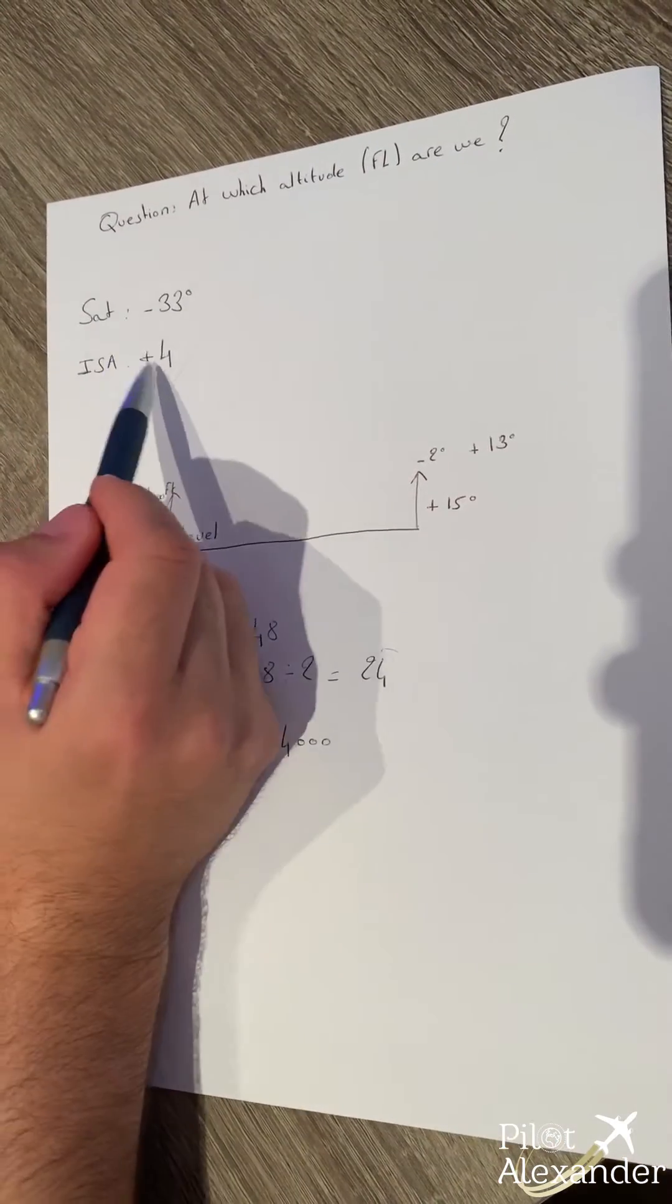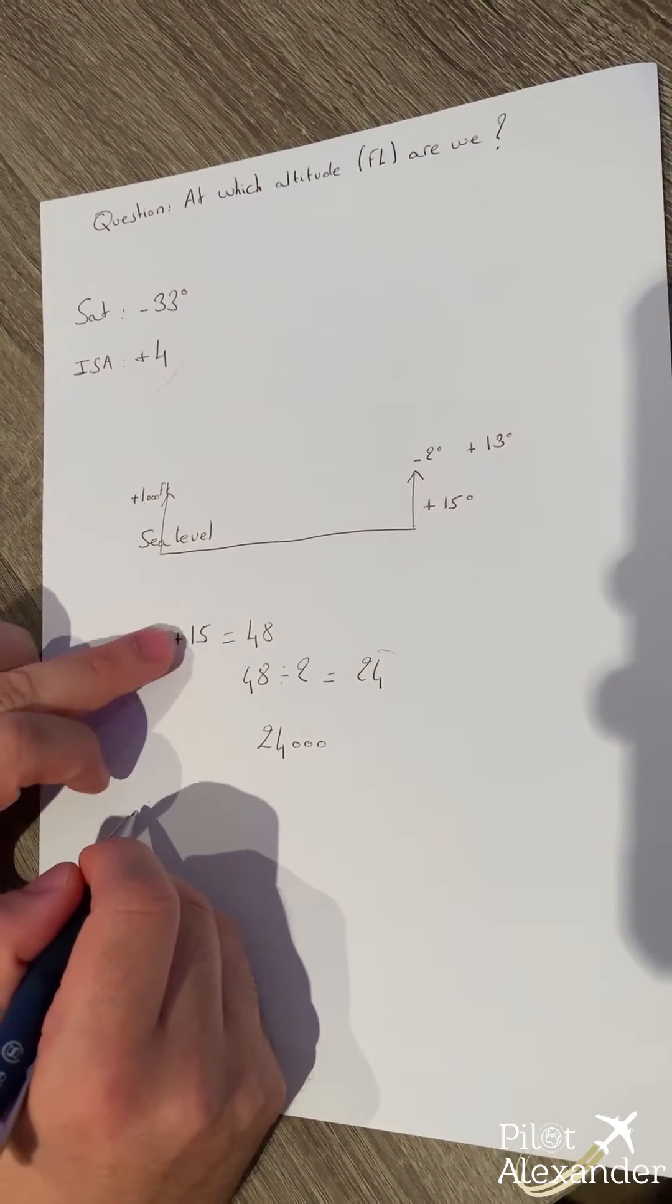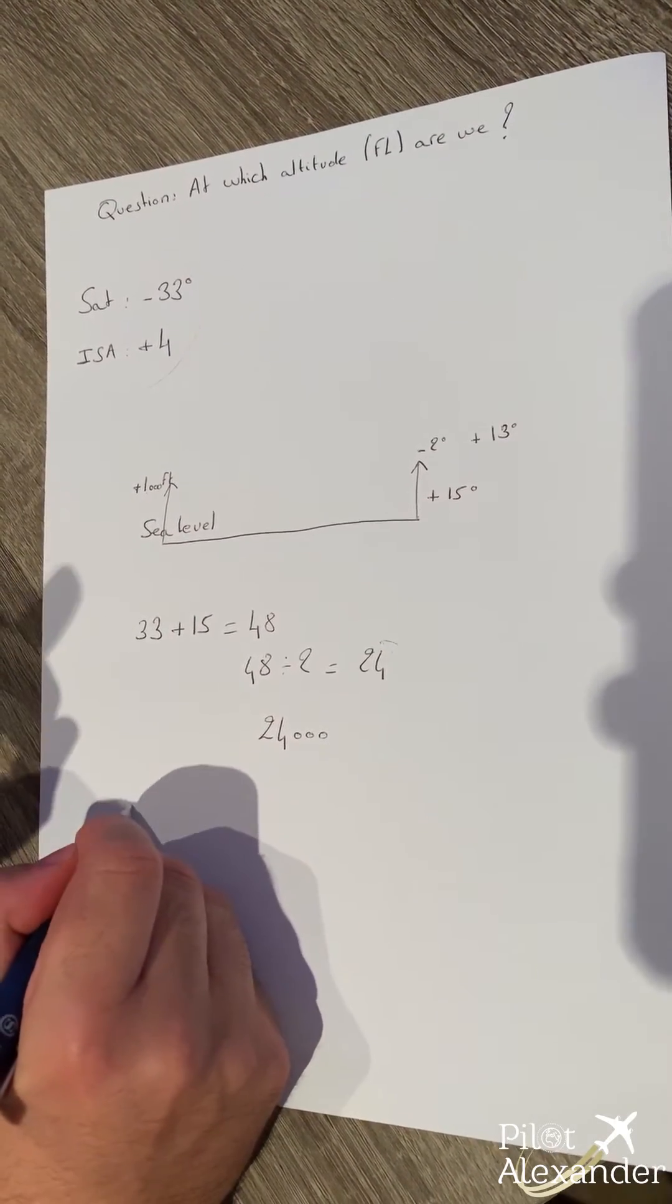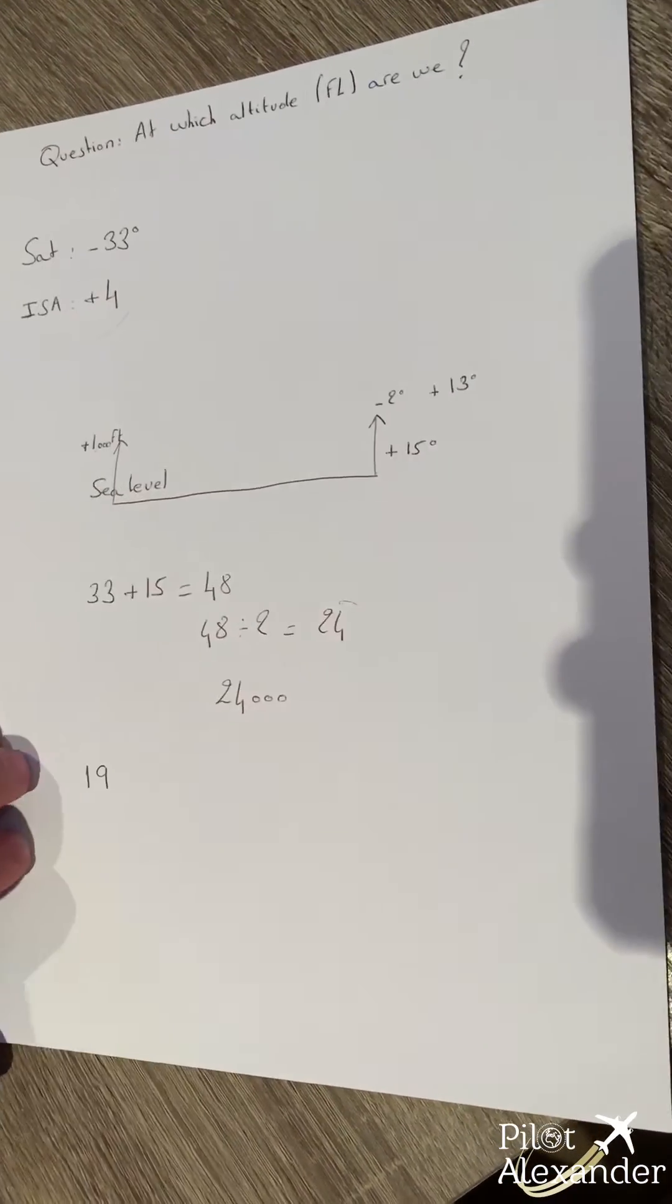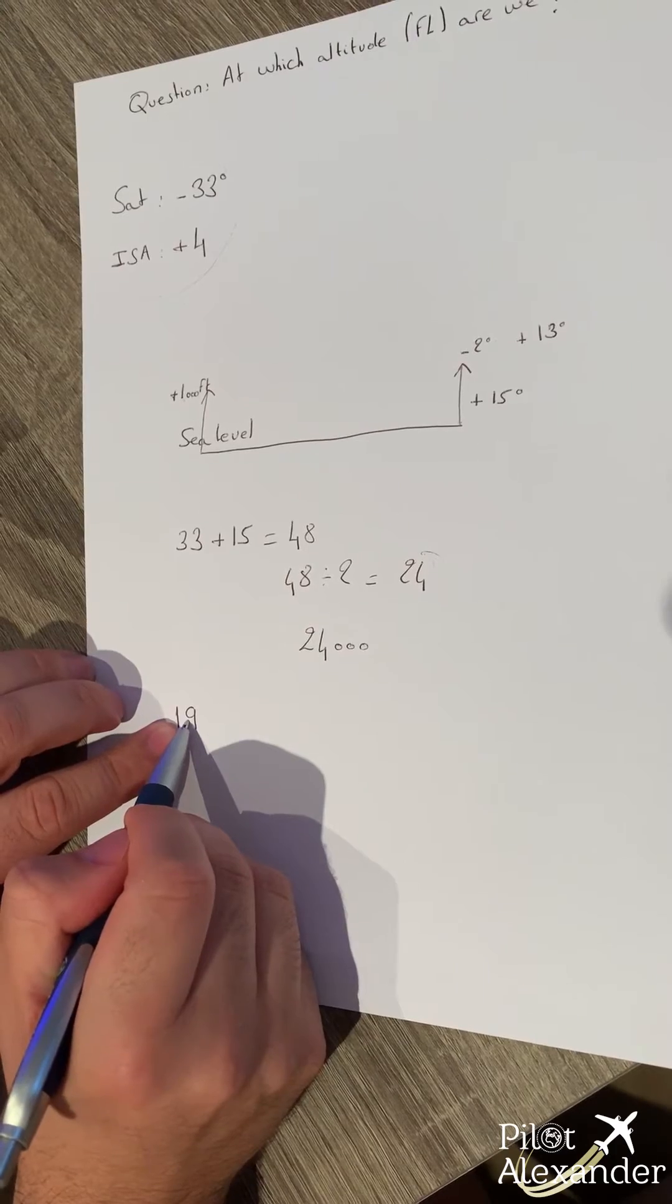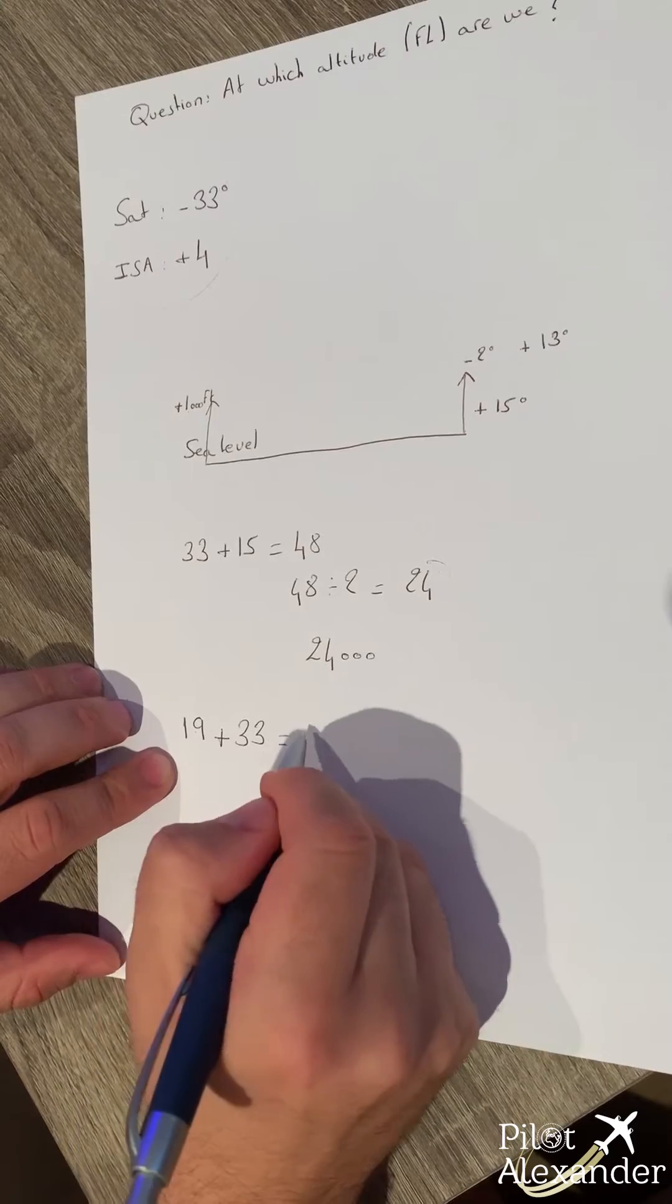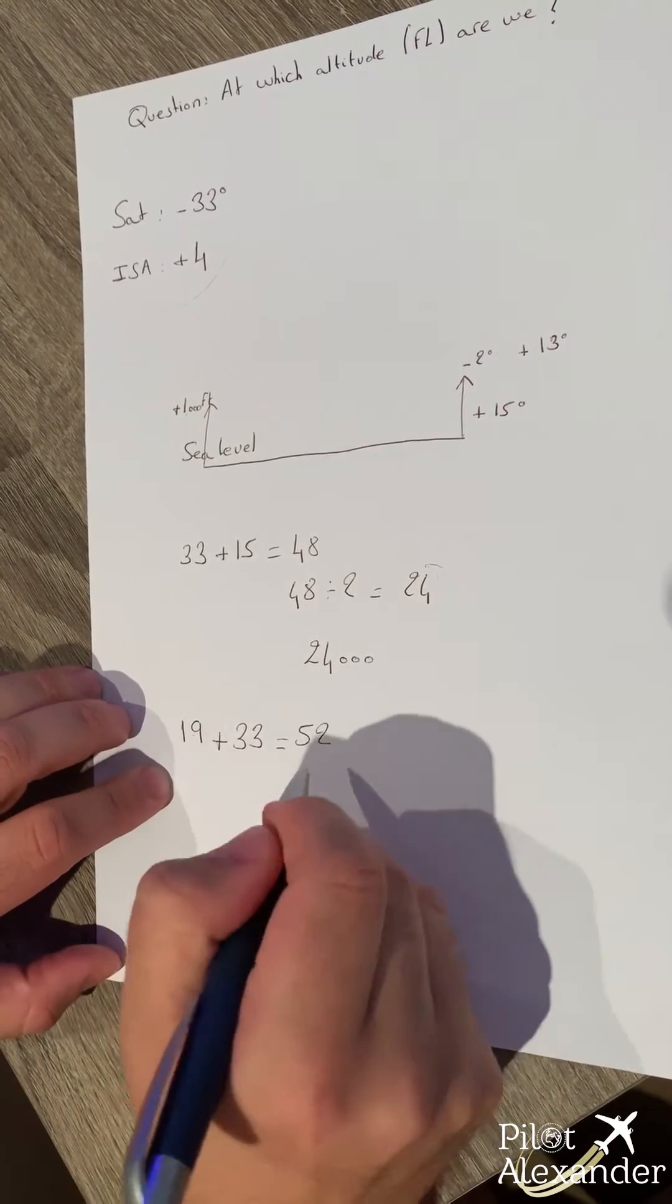Now, Captain Khalifa told us that it's plus four ISA. What does that mean? It means we are not at 15 degrees, but we are at 19 degrees. So we start here, we start even higher. So 19 degrees plus 33 makes it 52.